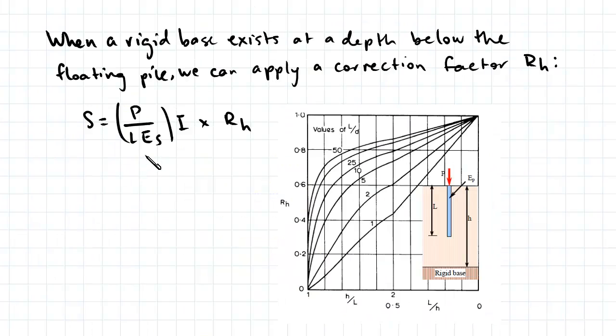When a rigid base exists at a certain depth below the floating pile, we can also apply a correction factor RH, which can be fixed.